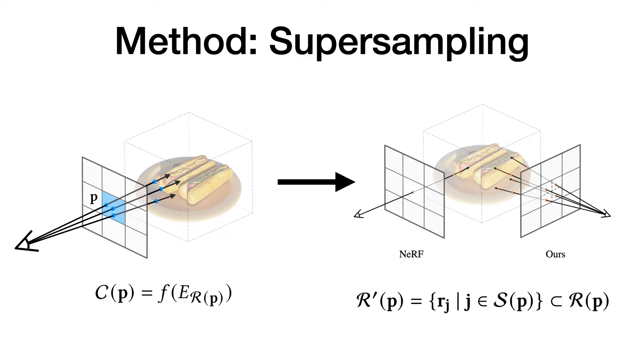In notation, during training stage, ray directions R for pixel P will be sampled from the subpixels instead. Here J represents subpixel P, R' is the subpixel for Rp.